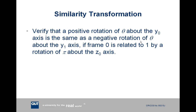We can verify this with the following challenge: if we have a positive rotation of theta around the y0 axis, we want to show this is the same as a negative rotation of theta around the y1 axis, given that the two frames are rotated relative to each other such that frame 1 is rotated by pi (180 degrees) around the z0 axis.